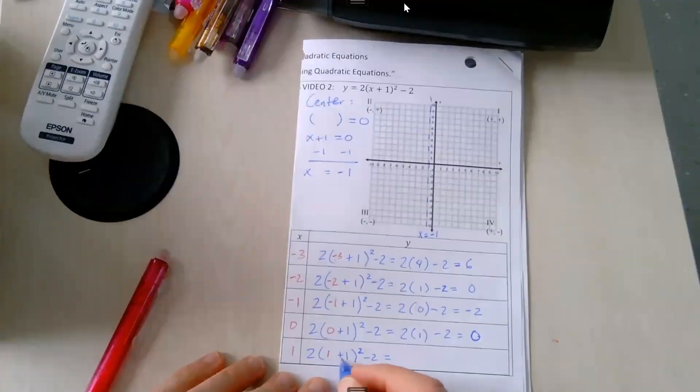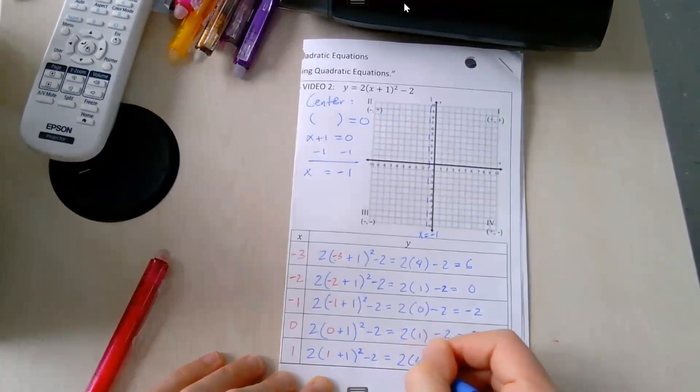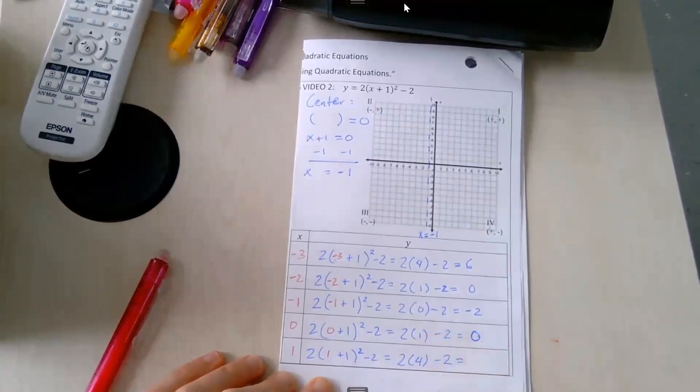1 plus 1 is 2. 2 raised to the second power is 2 times 2, which is 4. Now we'll say 2 times 4 is 8, and 8 minus 2 is 6.